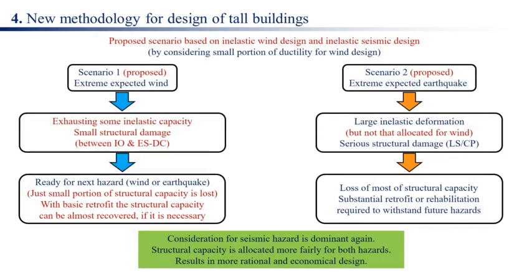Proposed Scenario 2: extreme expected earthquake causes large inelastic deformation — but not that already allocated for wind — resulting in serious structural damage (LS–CP) and loss of most structural capacity, requiring substantial retrofit or rehabilitation. Consideration for seismic hazard remains dominant, but structural capacity is now allocated more fairly for both hazards, resulting in a more rational and economical design.